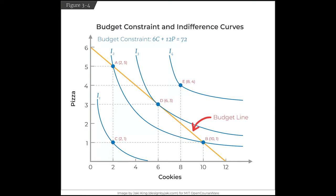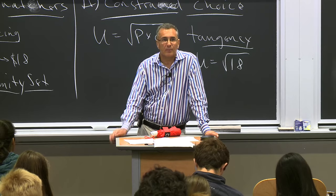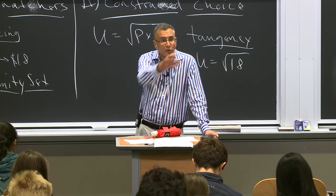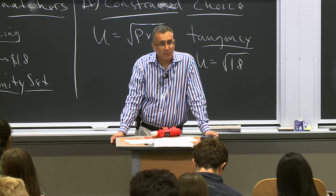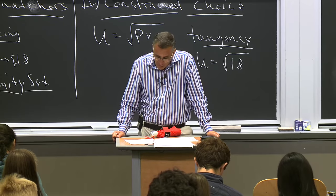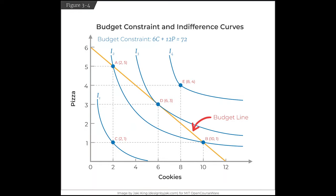Point D dominates point A because it's on a higher indifference curve. Why not choose point E? You can't afford it. Point C has the same slope as point D — minus one-half — but you wouldn't be spending all your money, so you wouldn't choose it either. This shows graphically why the tangency is the best you're going to do.